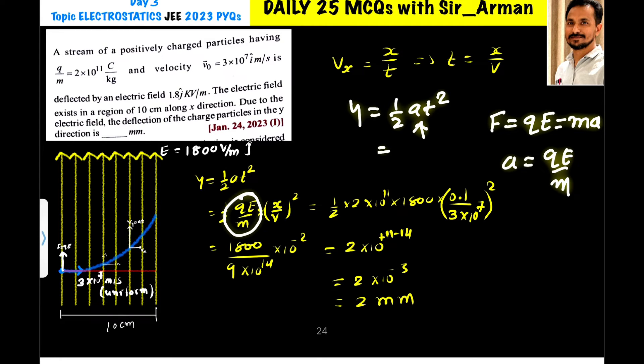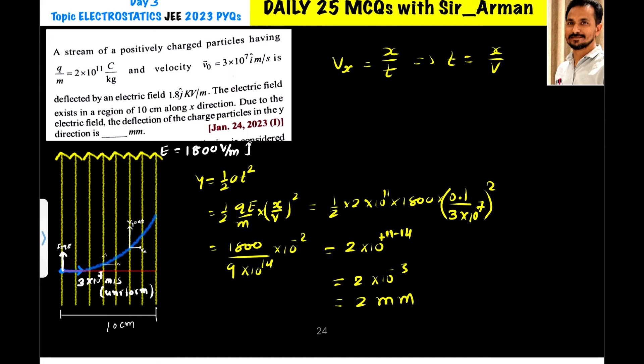And when it just completes this part. Because you are given that the electric field exists in a region of 10 centimeter along x direction. Means after the particle travels 10 centimeter in the x direction the electric field vanishes. In this electric field when it covers 10 centimeter in the x direction how much deflection in y is produced, that y we have to measure.